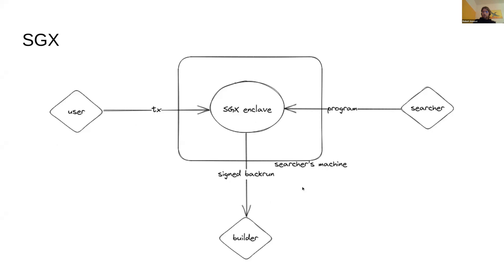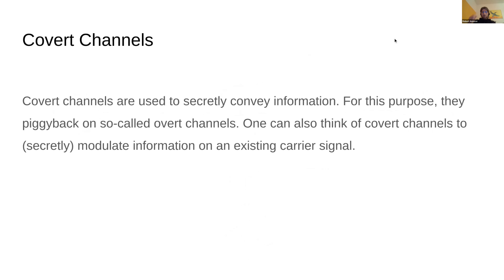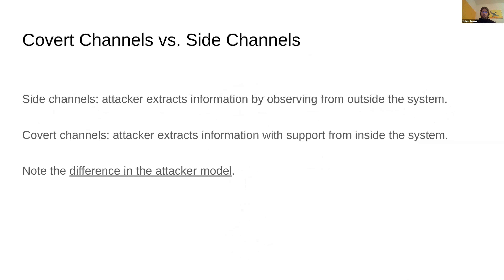That sounds great, but there's a catch: covert channels. Covert channels are ways to secretly convey information — they piggyback on so-called overt channels. If you're coming from a telecommunications background, you can think of covert channels as a way to secretly modulate information on an existing carrier signal. Most people understand it better when you compare covert channels to side channels, because people are usually aware of what side channels are.